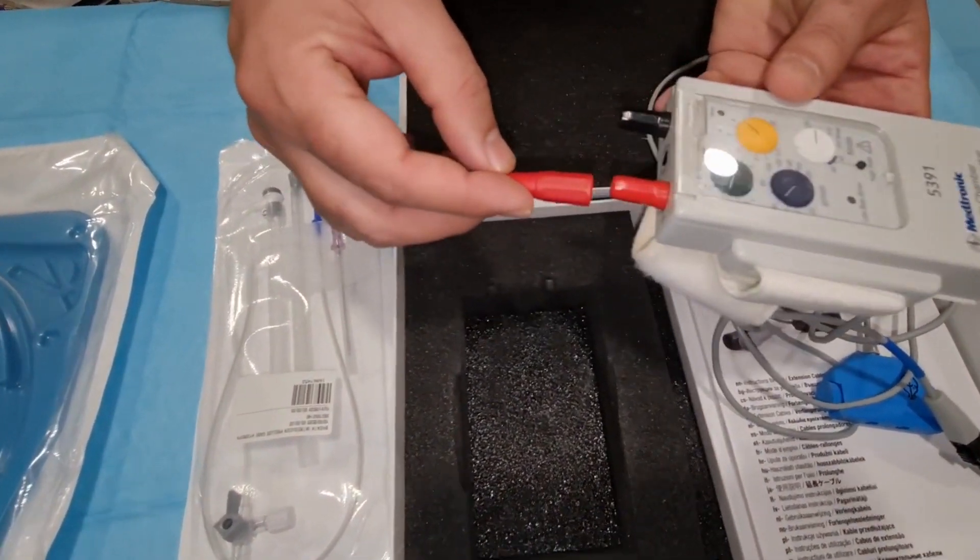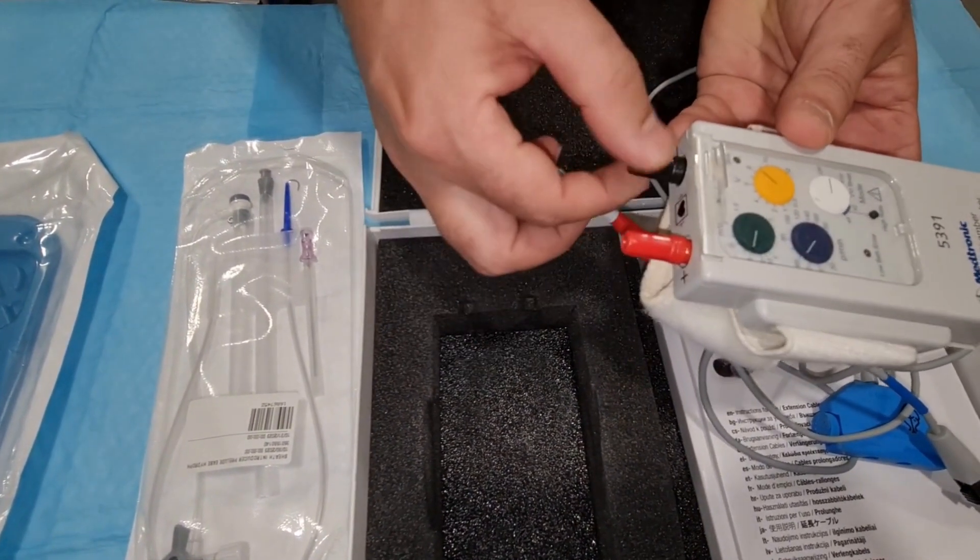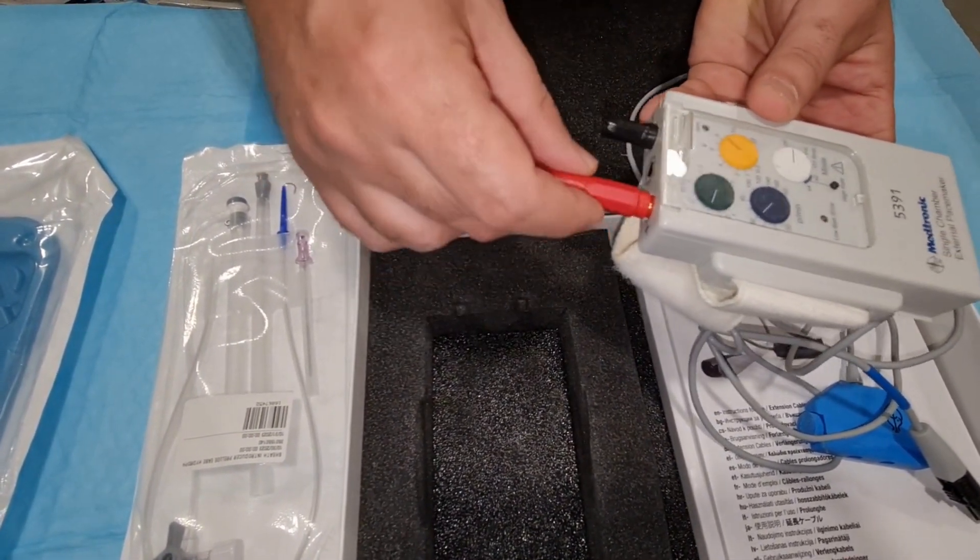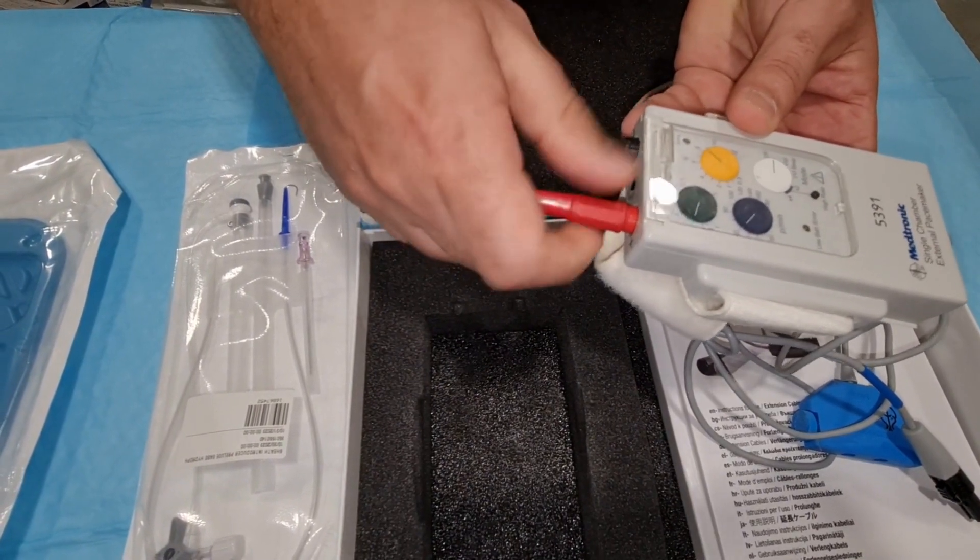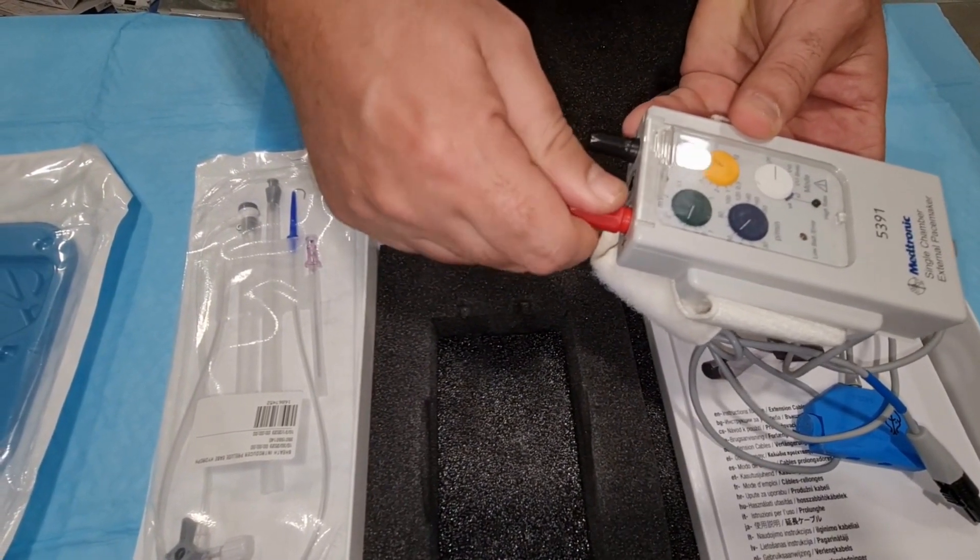Connect the red one, make it loosen first. Connect the red one, rotate it clockwise and tighten.